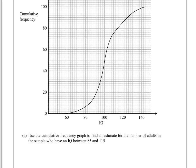The first question, part A, says use this graph to find an estimate for the number of adults who had an IQ between 85 and 115. The way we do this is we find those IQs. We have 80 there, so that's 90, so 85 is about there, and we can see that corresponds to about 10. That's 10 adults at around 85.